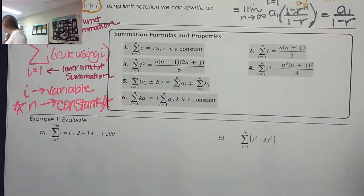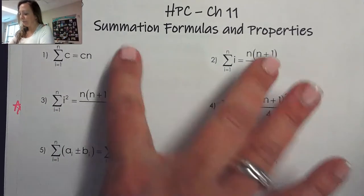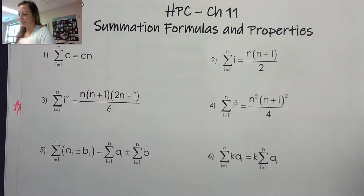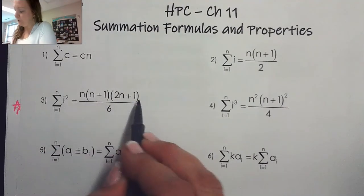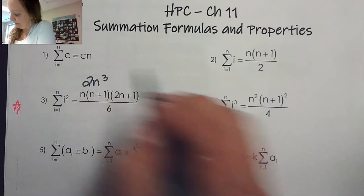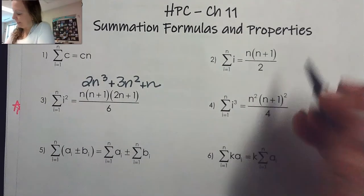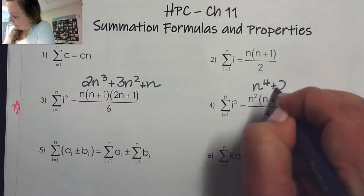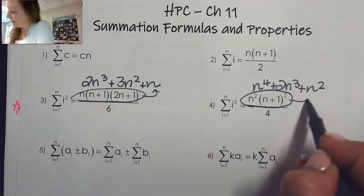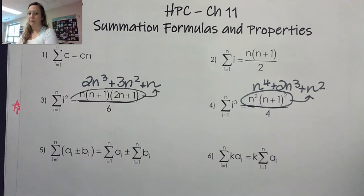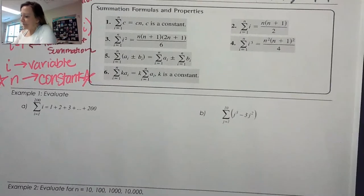You'll be given a sheet with the summation formulas and properties to use. Two useful expansions to note: n(n+1)(2n+1) simplifies to 2n³ + 3n² + n, and n²(n+1)² expands to n⁴ + 2n³ + n². Having these multiplied out will be handy as we work through this section. Let's practice using them in example one.